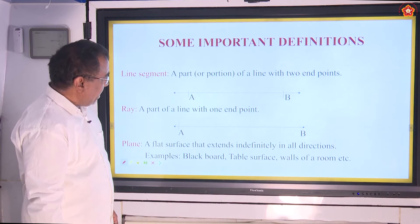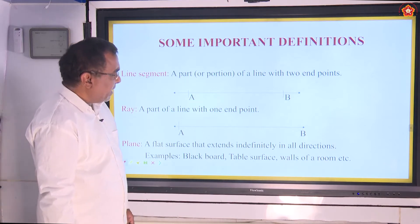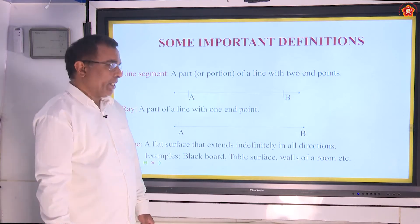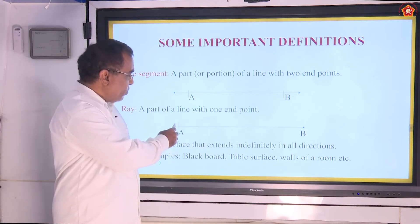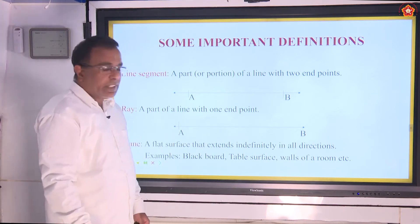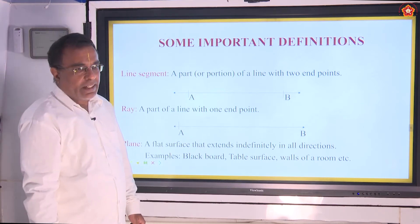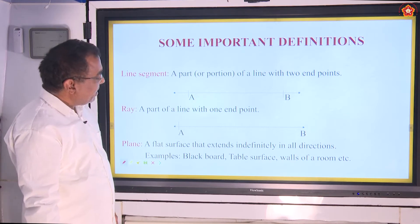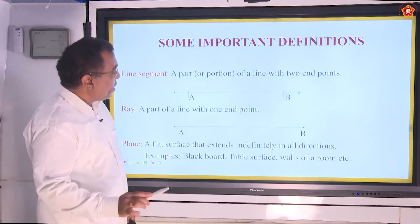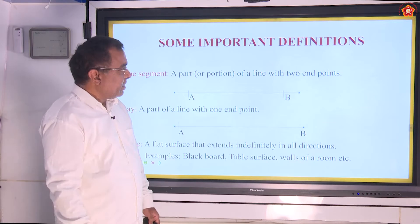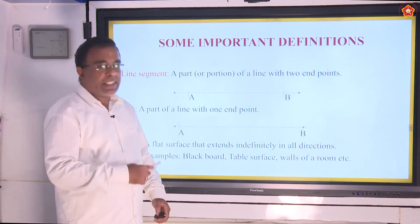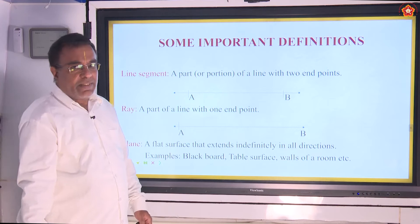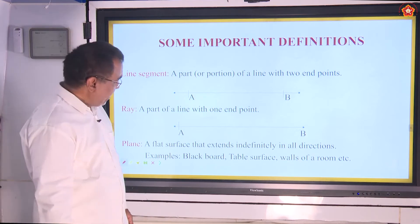Ray — what is meant by a ray? It is a part of a line with one endpoint. So, if a line has got only one endpoint, then it is known as a ray. Then, what is a line? It is that which has no endpoint. It will not have any endpoints. It extends indefinitely in both the directions.